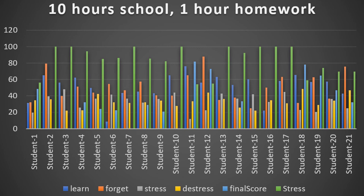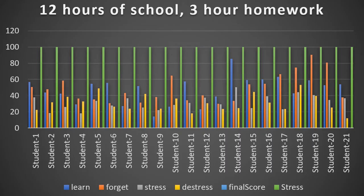In the 10-hour scenario, multiple students managed to hit the point of depression at 100 and therefore reach a final score of 0. The only ones who really avoided this were those with an easier time de-stressing than getting stressed. The only exception seems to be student 20, who has a slightly easier time getting stressed, but it's very close. So I think from this you could conclude that when having many hours of school, it becomes more important to manage stress than to manage performance. In the 12-hour scenario, every student managed to reach the point of depression, basically showing that no matter how good you are at avoiding stress, if you're forced into such conditions, there's no real way of avoiding it.